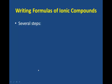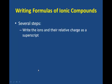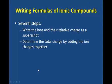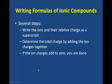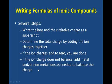How do we write formulas for binary ionic compounds? There are several steps. The first one is to write the ions and their relative charge as a superscript. The second step is to determine the total charge by adding the ion charges together. If the ion charge is added to zero, you're done. All you need to do is write the element symbols, metal first, and you'll have the formula. If the ion charge is not balanced, add metal and or non-metal ions as needed to balance the charge.